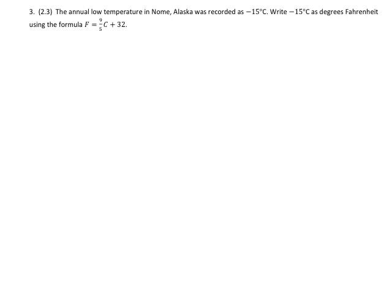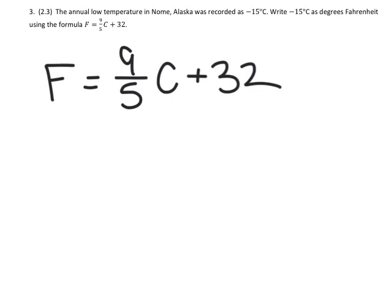The annual low temperature in Nome, Alaska was recorded as negative 15 degrees Celsius. Write negative 15 degrees Celsius as degrees Fahrenheit using this formula. They've given us this formula.